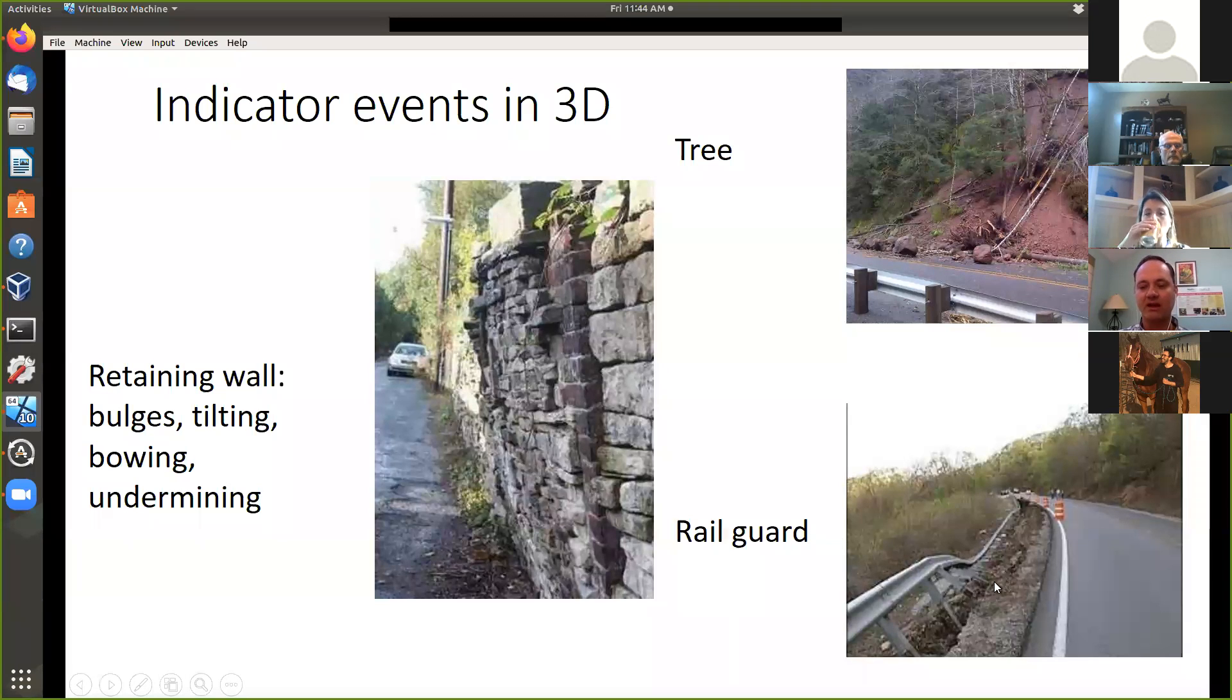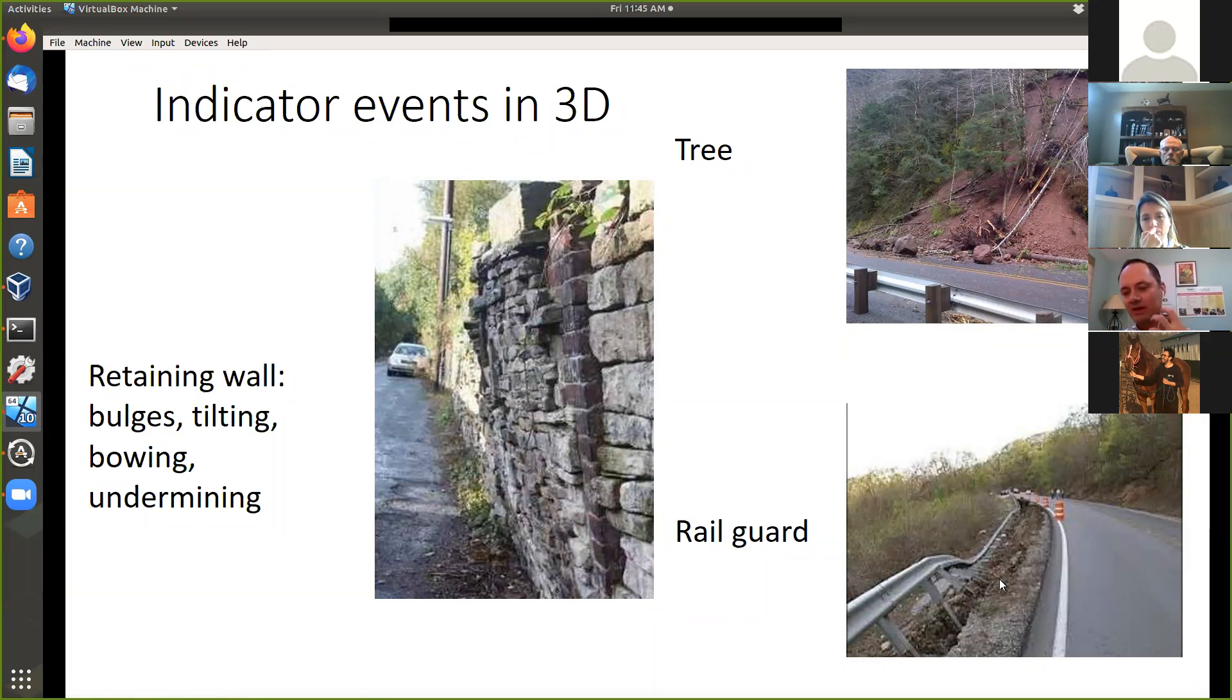Similarly, railguards, when the site gives way, the railguard will bend. If you have first a 3D model of the railguards when it was first constructed, and then you observe it over time, if it starts bending, that might be another indicator that there's a landslide going on.